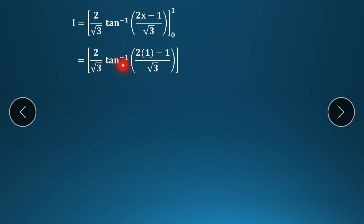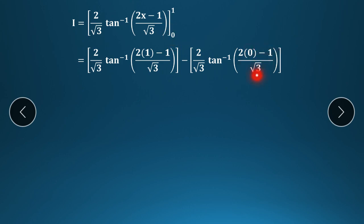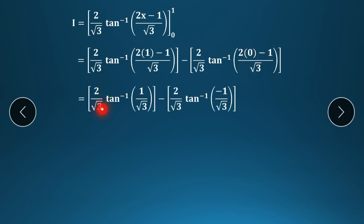Now substitute the limits. Upper limit x=1: tan⁻¹[(2×1−1)/√3] = tan⁻¹[1/√3]. Minus lower limit x=0: tan⁻¹[(2×0−1)/√3] = tan⁻¹[−1/√3]. So we get (2/√3)[tan⁻¹(1/√3) − tan⁻¹(−1/√3)].